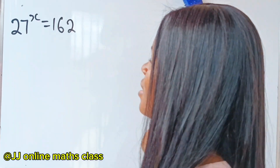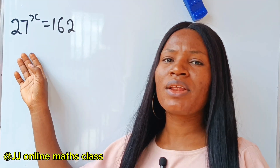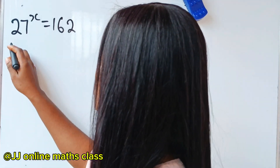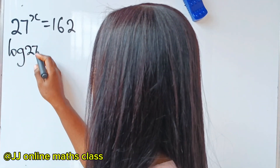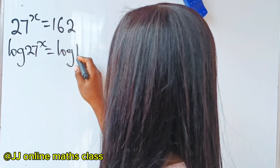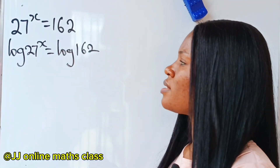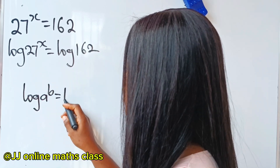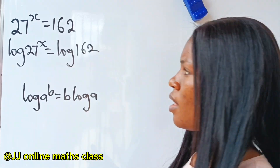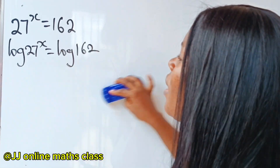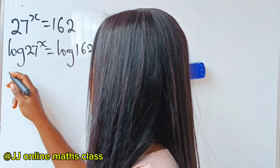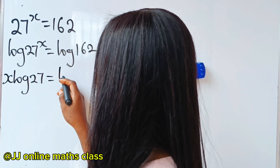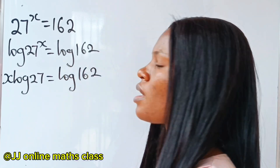Now we are asked to solve for x. The only approach here is to introduce log to both sides of the equation. So we are going to introduce log to both sides, giving us log on the left and log 162 on the right. When you have log a to the power of b, this becomes b multiplied by log a. So we bring the exponent down: x multiplied by log 27 is equal to log 162.